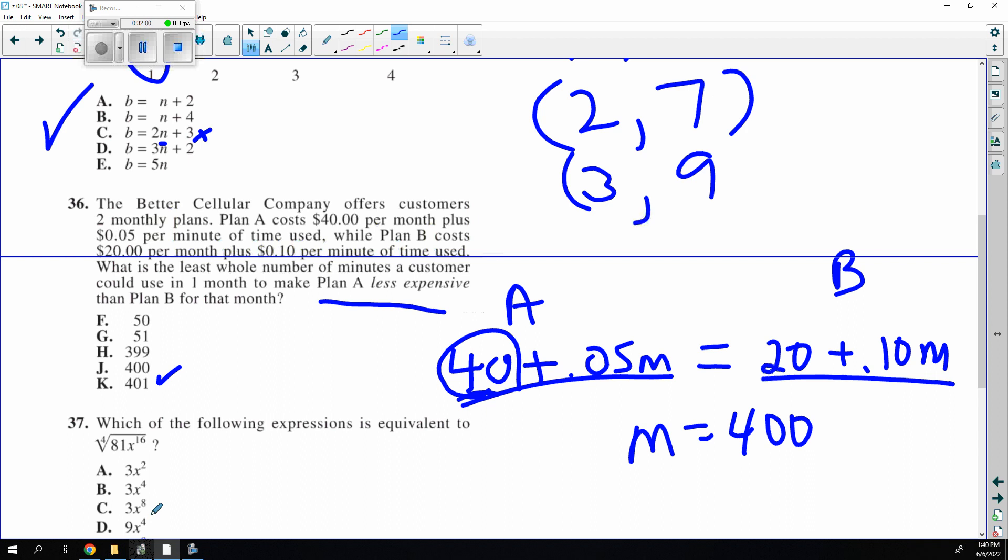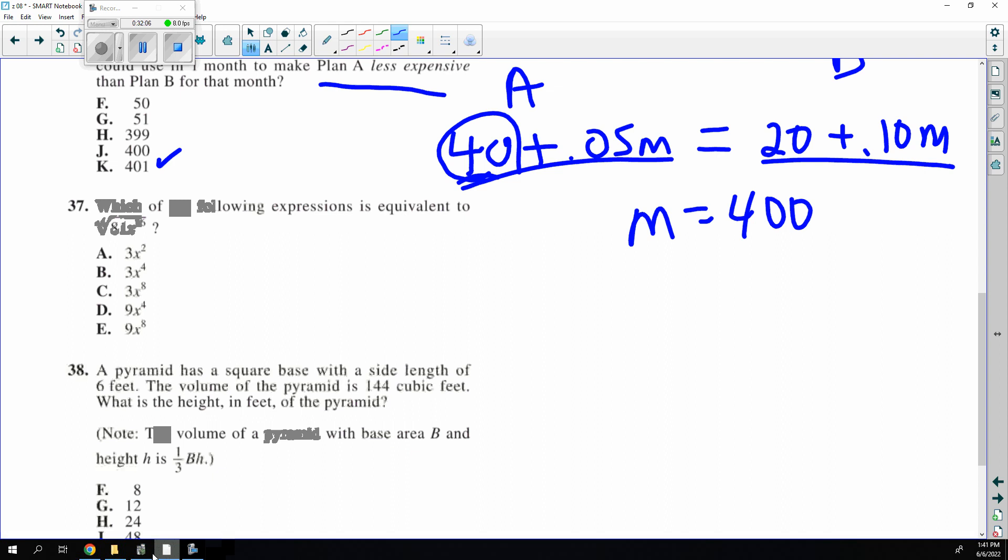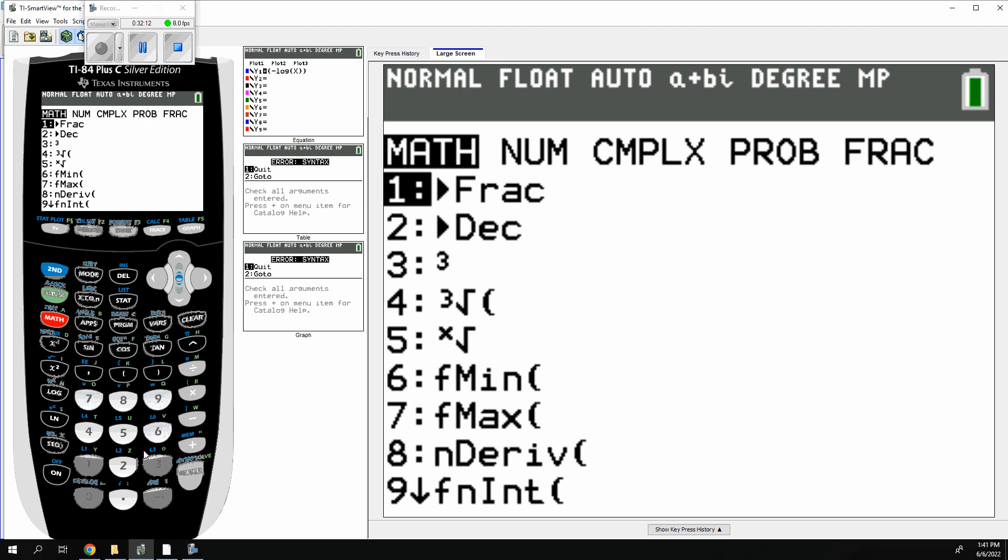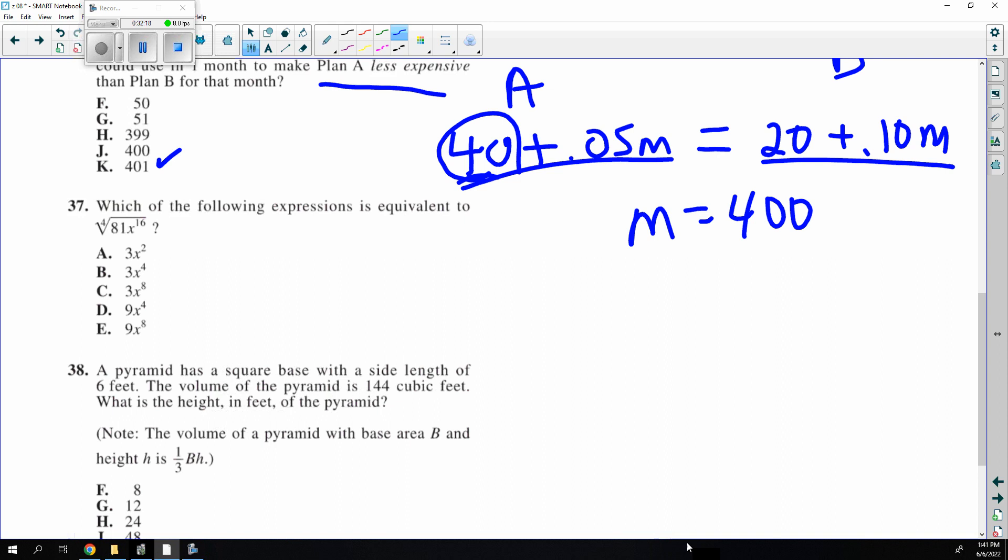Be careful with this one. The fourth root of 81, you have to go 4 math root, and that would do that for you. It's 3. And then the fourth root, basically what I teach my students is 4th root is to the 1 4th power. So power to a power, you multiply 16 times 1 4th.